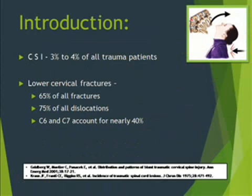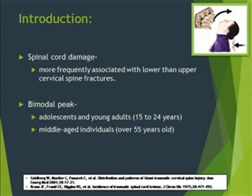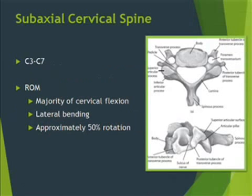Cervical spine injuries constitute 3 to 4 percent of all trauma patients. The lower cervical fractures constitute 65 percent of all fractures and 75 percent of all dislocations. C6 and C7 fractures account for nearly 40 percent. Spinal cord damage is more frequently associated with the lower than upper cervical spine fractures and has a bimodal peak, with a second peak in people more than 55 years of age.